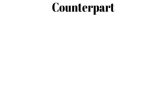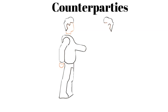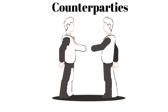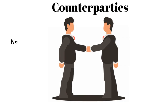For two banks to be able to exchange foreign currency transactions they must become counterparties. They perform due diligence to ensure the other bank is of good character and set up bank accounts with each other. Nostro means ours and Vostro means yours. Thus our account at a foreign bank is our Nostro, but to the other bank that account is a Vostro.